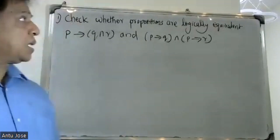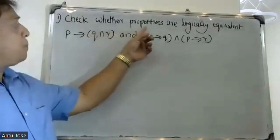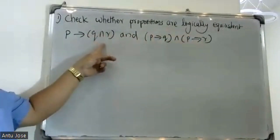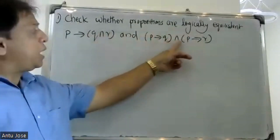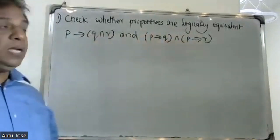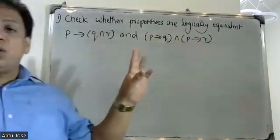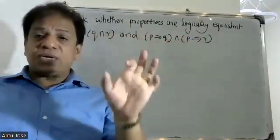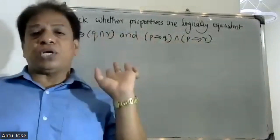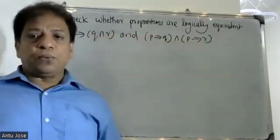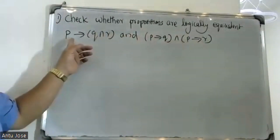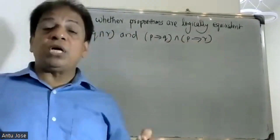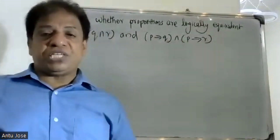Good morning students. Check whether the propositions are logically equivalent: p conditional q and r, and p conditional q and p conditional r. Two propositions are logically equivalent when s1 and s2 will have the same truth values. Here we have three variables p, q, r, therefore the possible number of truth rows will be 2 to the power of 3, which is 8.